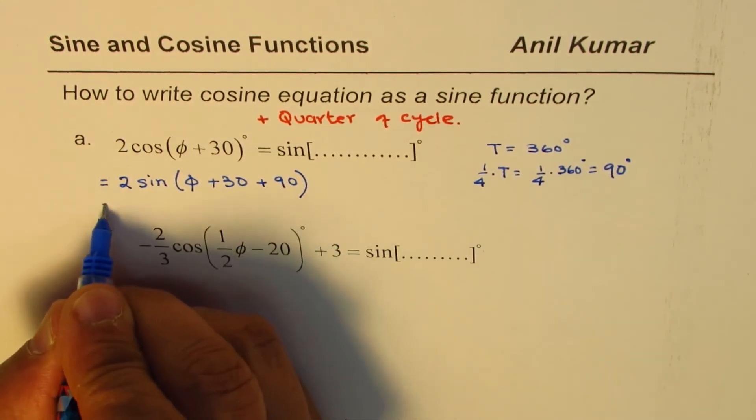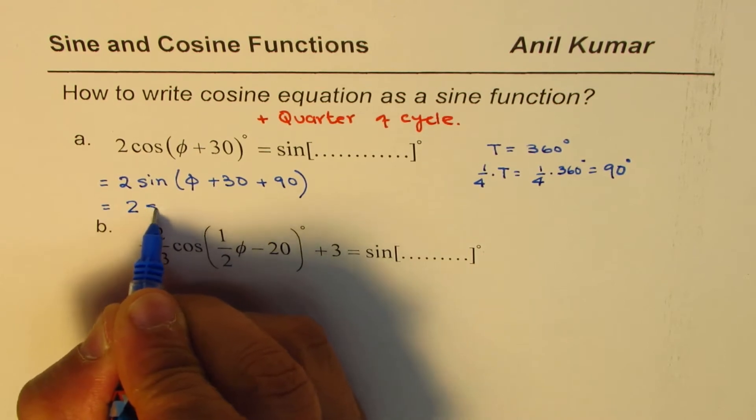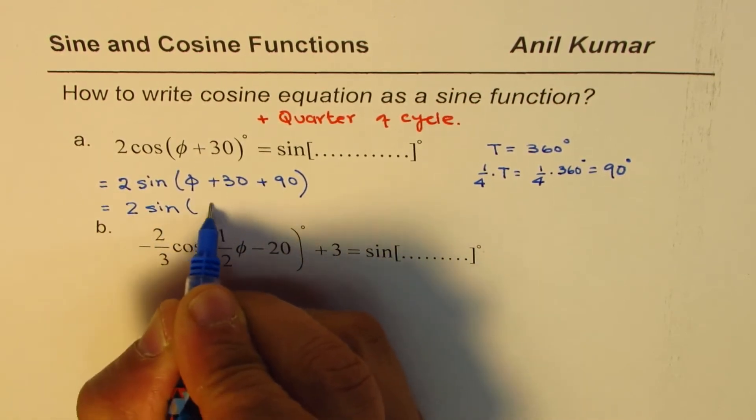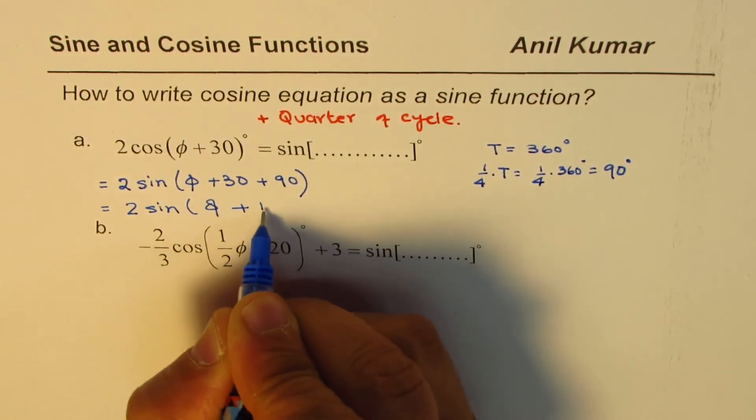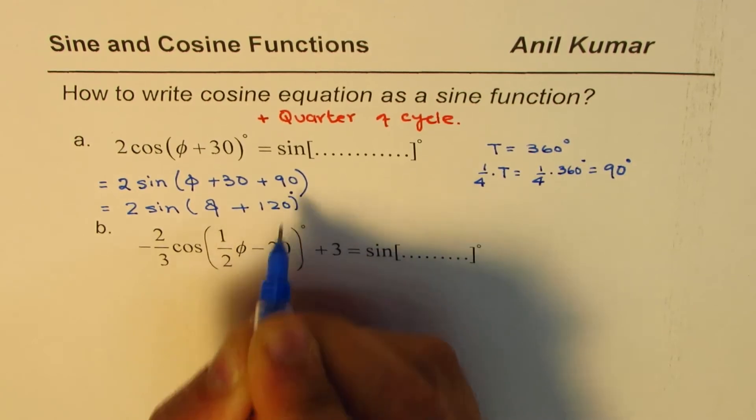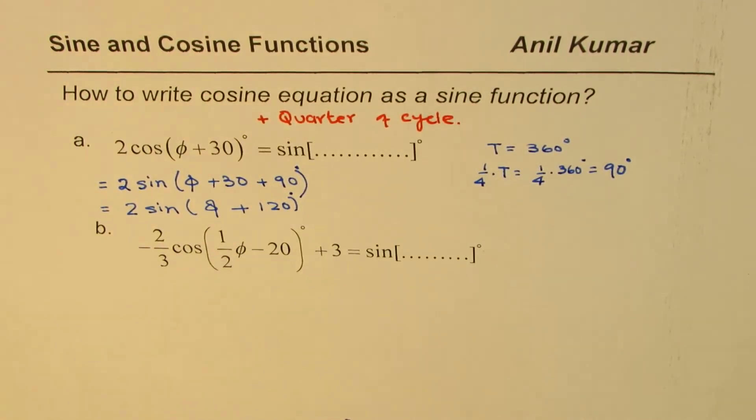So you get your answer which is 2 sin(φ + 120°). So that is how you could actually change a cosine equation into a sine function.